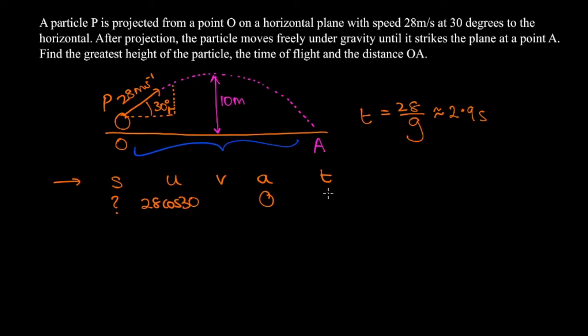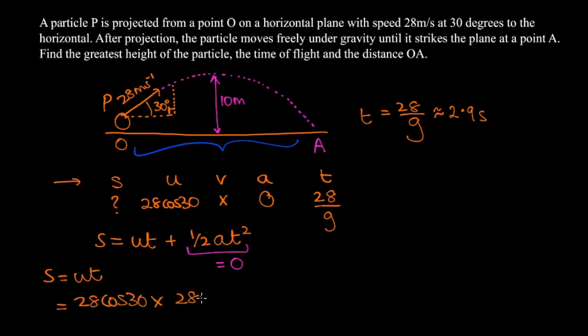Finally, we just worked out the time it takes for P to get from O to A. That was 2.9 seconds. But we won't use the rounded answer because that could introduce some error. Instead, we'll use our exact answer, which was 28 over g. So we'll put a cross below v. We'll use s equals ut plus a half at squared. Since a equals 0, then this whole term right here is equal to 0 as well. Therefore, that leaves us with s equals ut, which means s equals 28 cos 30 times 28 over g. And if we take g to be 9.8 again, then this comes out as 69 meters to 2 sig fig. So the distance between O and A is 69 meters.